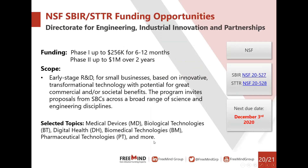Moving on to the NSF, or National Science Foundation. It funds roughly 400 companies every year via its SBIR and STTR programs, for approximately $200 million total. The R&D should be based on innovative technology with potential for great commercial and societal benefits. The program invites proposals from small businesses across a broad range of science and engineering disciplines. If successful, you'll receive a grant up to $256,000 for six to twelve months for phase one, and then you can compete for a second grant of up to $1 million over two years to advance toward commercial deployment.